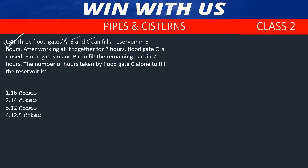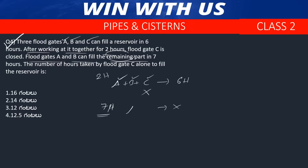Question number 4. Three floodgates A, B and C can fill a reservoir in 6 hours. After working together for 2 hours, C is closed; A and B then fill the remaining reservoir in 7 hours.